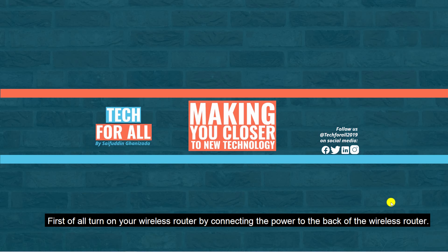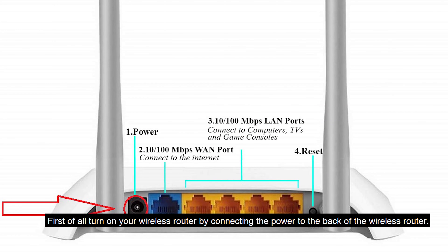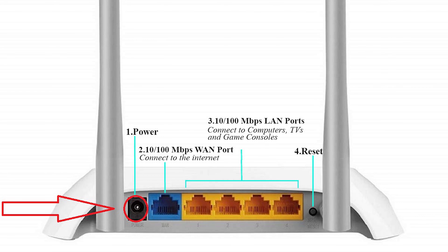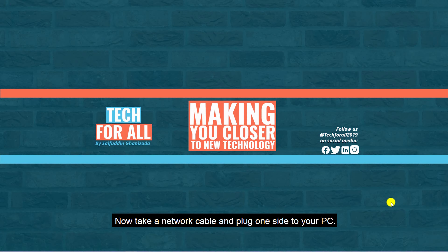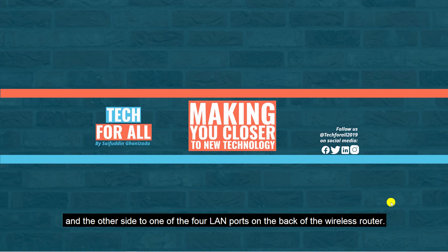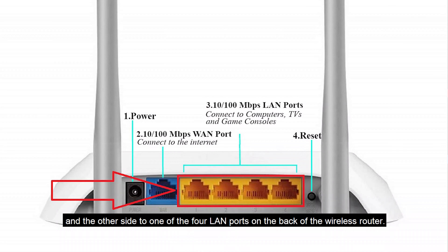First of all, turn on your wireless router by connecting the power adapter to the back of the wireless router. Now take a network cable, plug one side to your PC and the other side to one of the four LAN ports on the back of the wireless router.